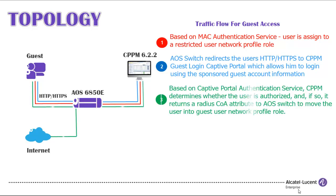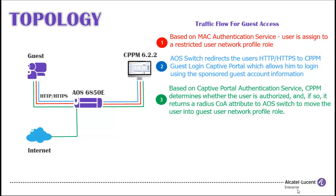Based on Captive Portal Authentication Service, CPPM determines whether the user is authorized. If so, it returns a RADIUS COA attribute to the AOS Switch to move the user into the guest user network profile role.